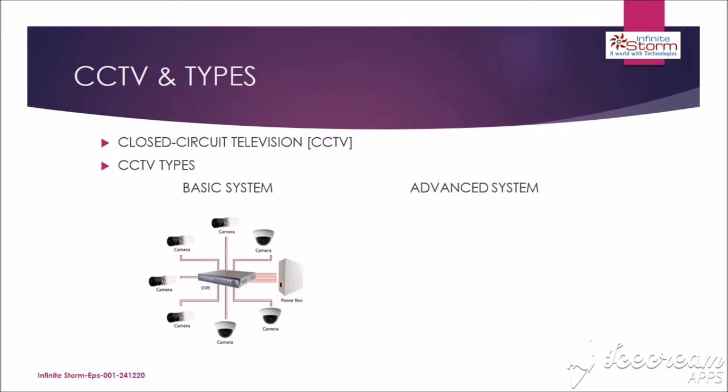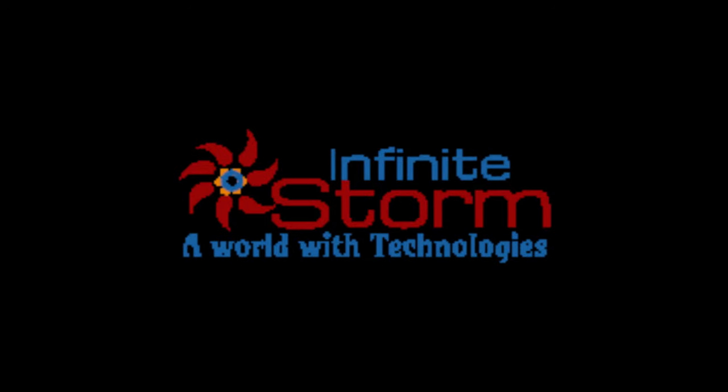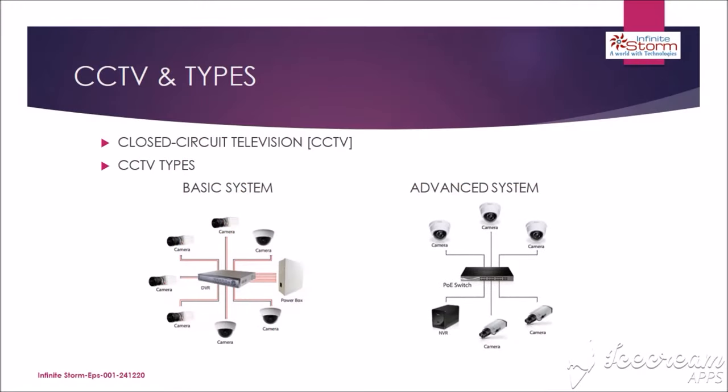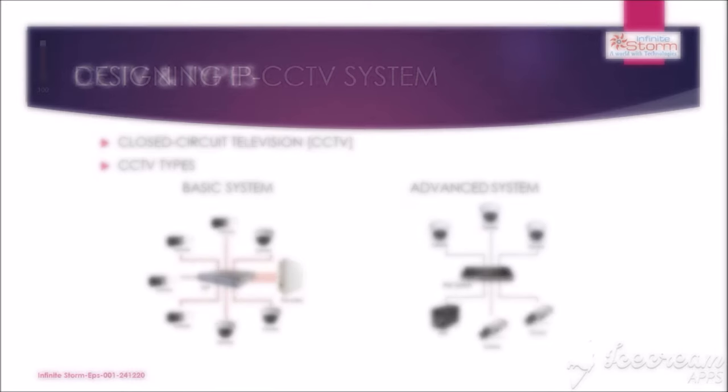Security cameras in the analog system capture an analog video signal and transfer that signal over coax cable to the digital video recorder. Whereas IP cameras capture images in much the same way as a digital camera and compress the files to transmit over the network. IP cameras may be used with a wired network connected via ethernet cable to a broadband modem or router, or wirelessly via a Wi-Fi router.